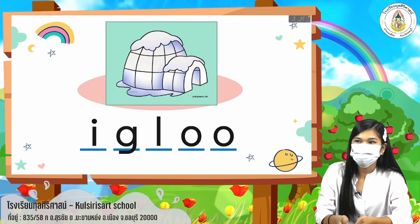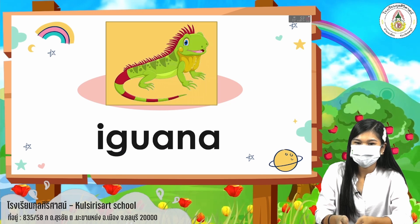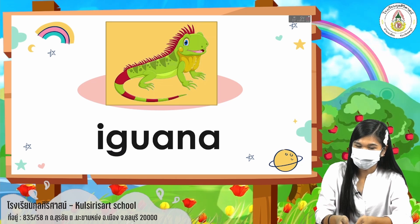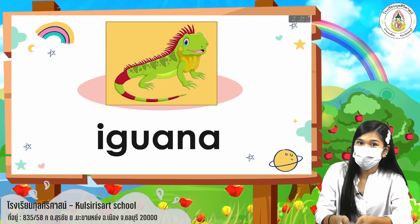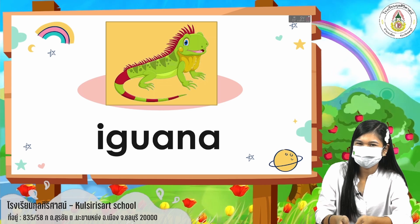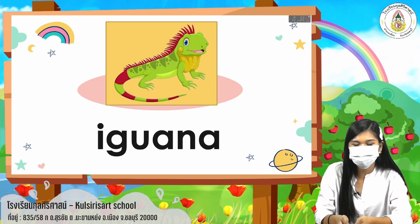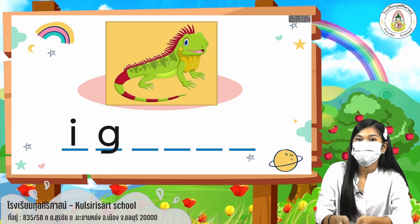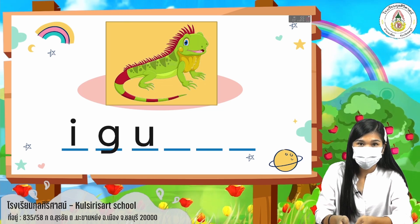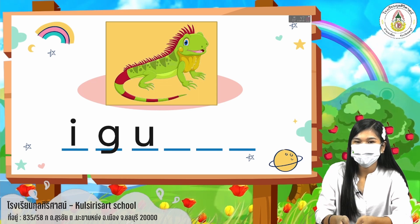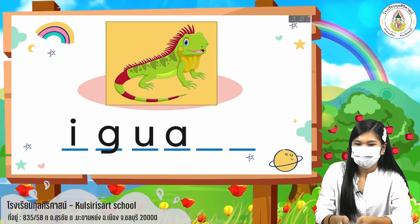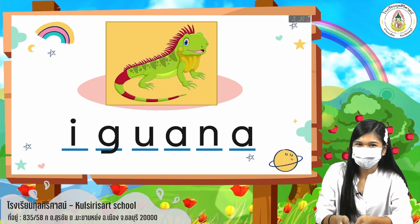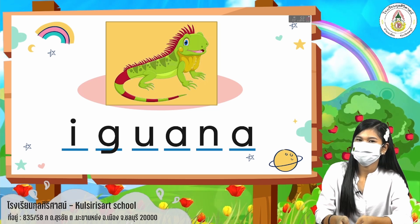Next, we have here — we call it iguana. Say it one more time. Now let's spell it out: I, G, U, A, N, A. Iguana. Good job.